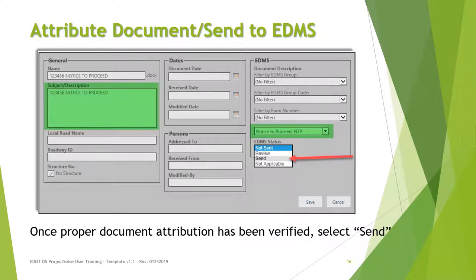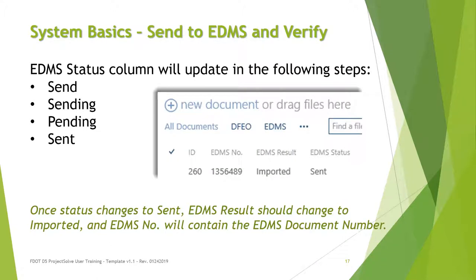Select Review to mark the document as ready for review by another contract staff member before sending. You can check whether a document has been sent to EDMS by checking the EDMS status column. After a document has been sent, the status column will show Sending, Pending, and then finally Sent. It's important to remember that the transfer process typically takes anywhere from 20 minutes to 2 hours, but it can take longer. If your document has not transferred successfully by the following morning, please contact your PSSP Administrator.